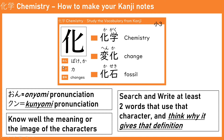What I want you to understand is not only the reading — the important thing is the image or the meaning of the characters. Know well the meaning or the image of what the character represents. For example, with two kanji here, we look at what each character represents, and when we match both images and meanings, we get the meaning of the combined word.